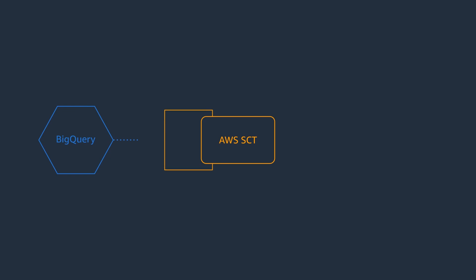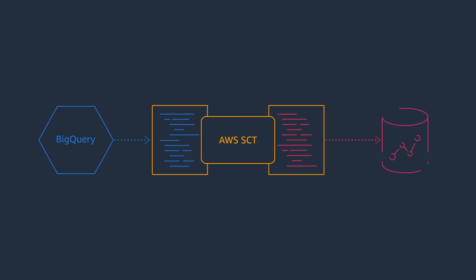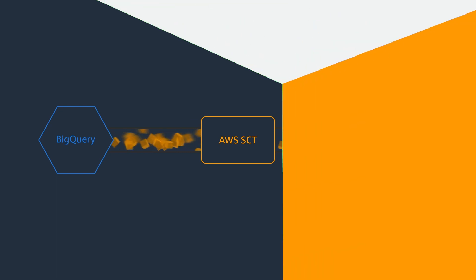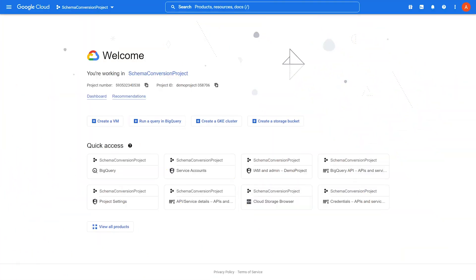You can use the AWS Schema Conversion Tool to convert BigQuery database objects to a format compatible with Amazon Redshift. Then you can apply the converted code to your target database and migrate data. This video shows how to get started with BigQuery to Amazon Redshift migrations and covers the key steps of this process.